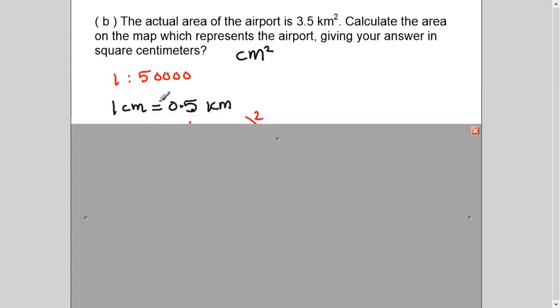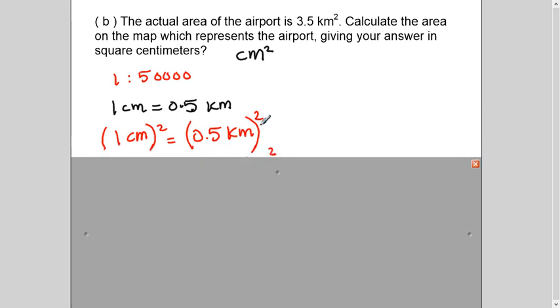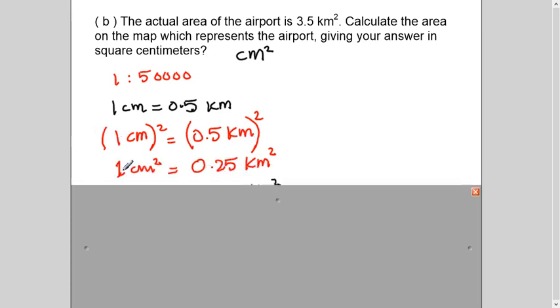So first of all, I have used the same 1 centimeter equals to 0.5 kilometers, I've just explained in the first part. Then I'm squaring both sides. You know why? Because I have to change this scale, which is given in single unit into square unit, into area unit. So now 1 squared is 1 centimeter squared is a square centimeter. 0.5 squared is 0.25 and kilometer squared will be square kilometers. So now this is my scale on the map.